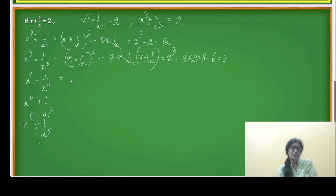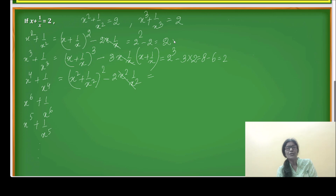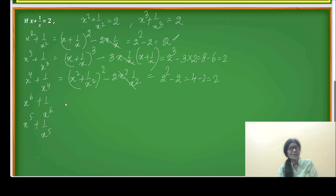Now coming to x to the power 4 plus 1 over x to the power 4. This can be written as (x² + 1/x²)² minus 2 times x² times 1 over x². These cancel and x squared plus 1 over x squared we already found is 2, so it will be 2 squared minus 2, which is 4 minus 2 equals 2.